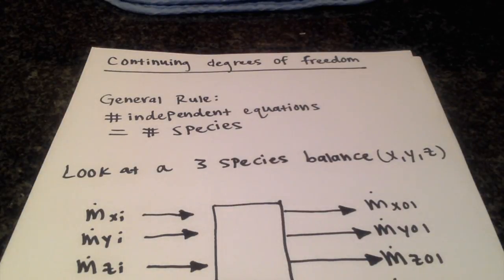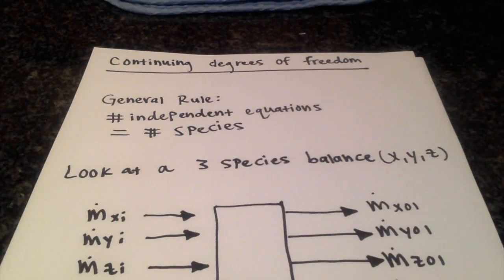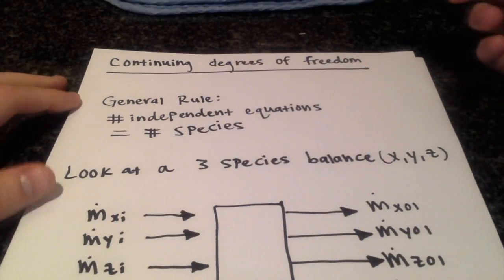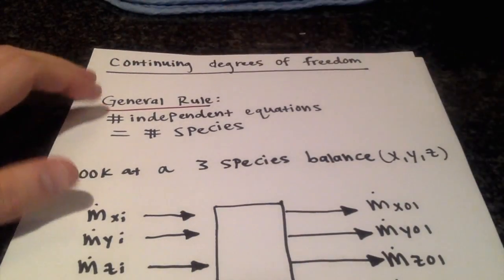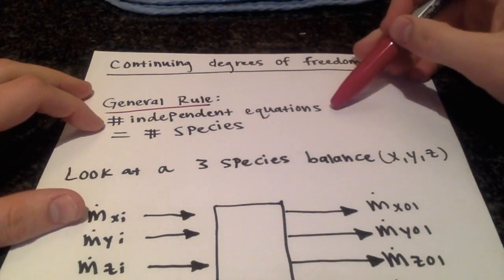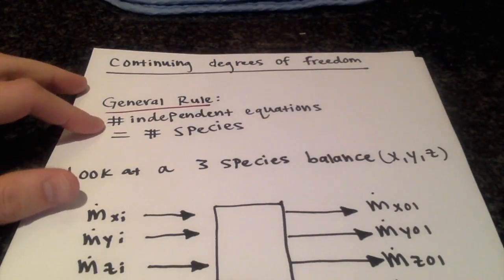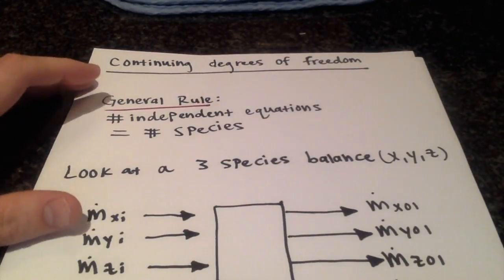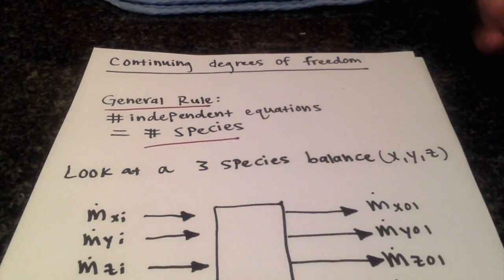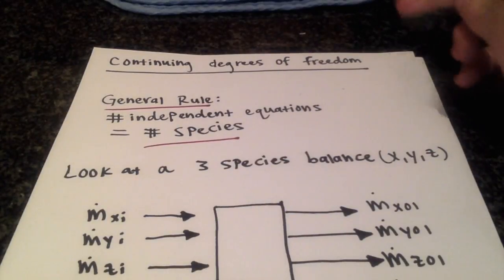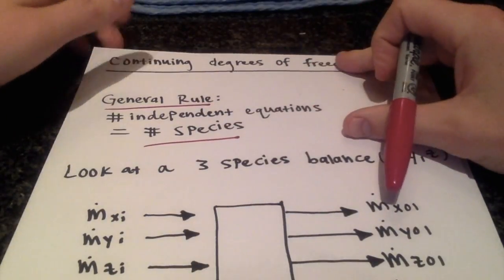In this video we're going to be continuing to look at degrees of freedom analysis. One thing I want to introduce is this general rule: when you're writing independent equations, the number of independent equations that you can write is going to be equal to the number of species. Rather than just accepting that, we'll look at a very simple case and verify this for ourselves.